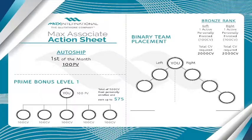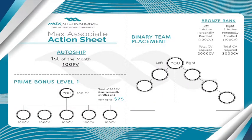So your first step is to be on auto ship. That's clear. Now for Prime Bonus Level 1 — remember we talked about that being the building block — think about and write down five people you would want to bring in as business partners. Who are five really sharp, business-minded individuals that are going somewhere in life, open to new opportunities, who want residual income? Who are the first five people you'd share this with?